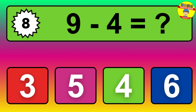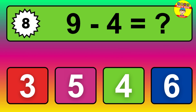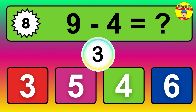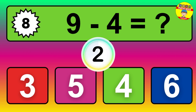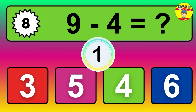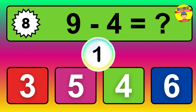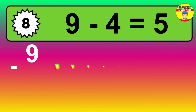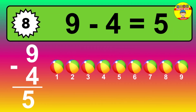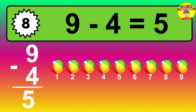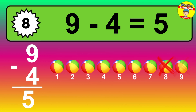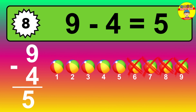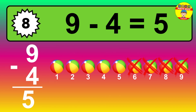Question eight: nine minus four equals what? So the answer is nine minus four is five. Let's count it. One, two, three, four, five.